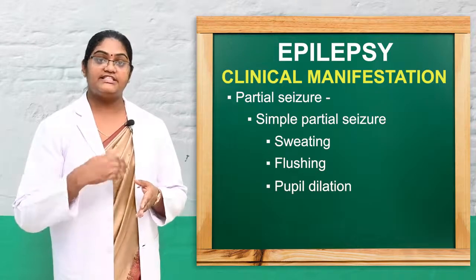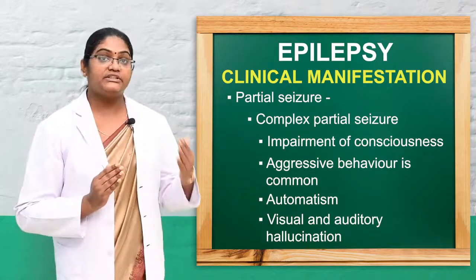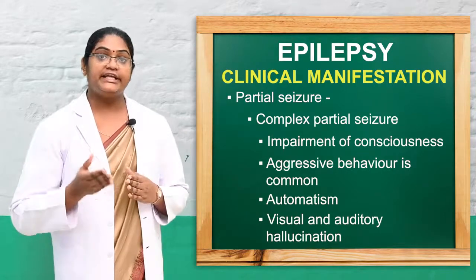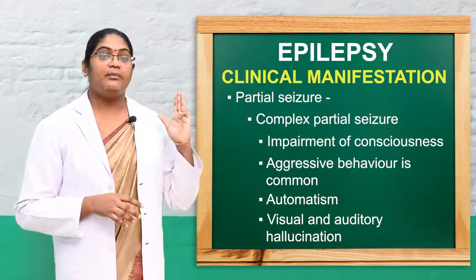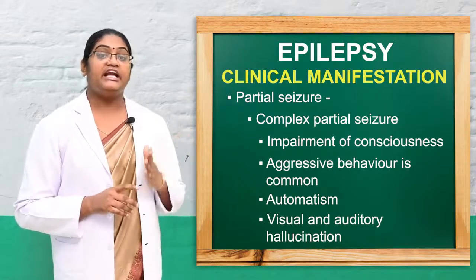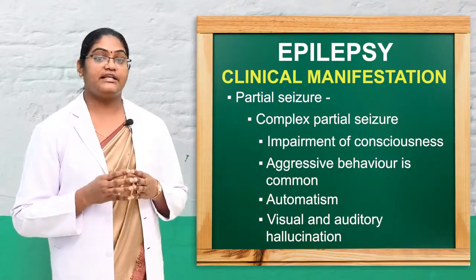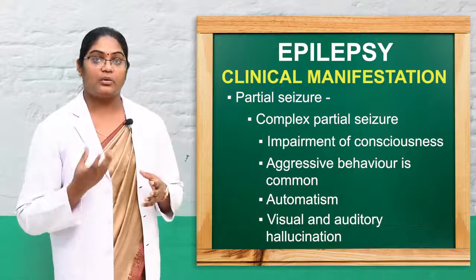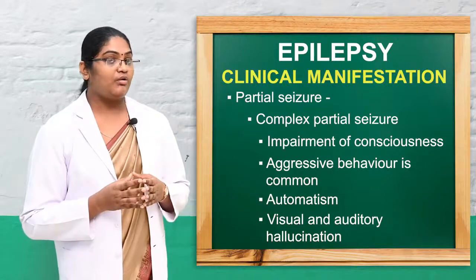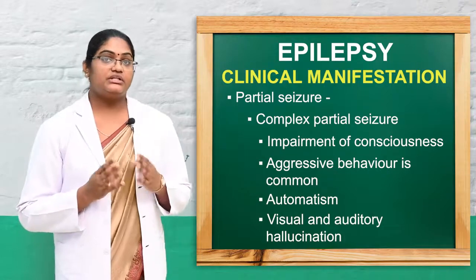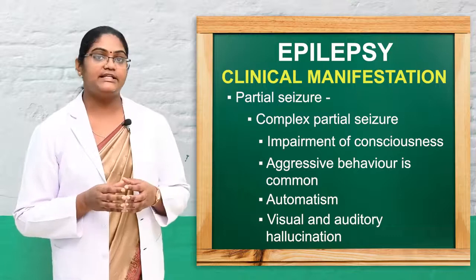In complex partial seizure, the symptoms are impaired consciousness and purposeless behavior, aggressive behavior, and automatism — such as picking at clothes. Visual and auditory hallucinations are also present. These are the symptoms noticed in complex partial seizure.